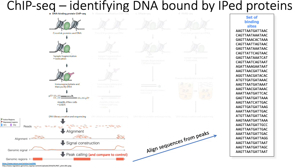What happens after cross-linking is that you then fragment your genome. In theory, what you're going to end up with is a bunch of fragments of free DNA, and you're going to end up with a bunch of fragments with your transcription factors bound to their target DNA sequence.